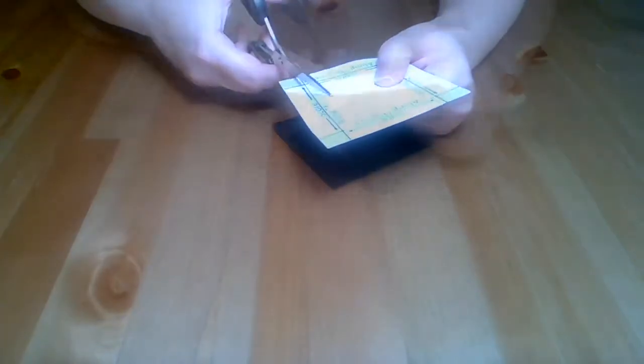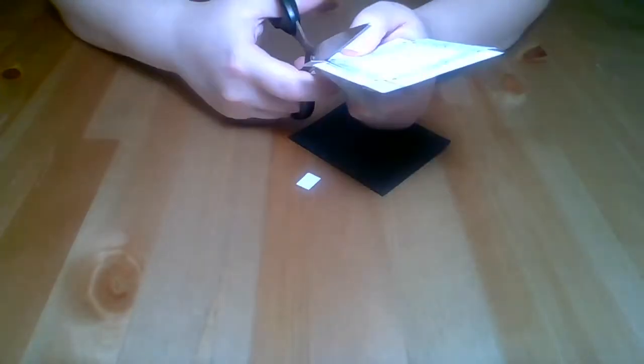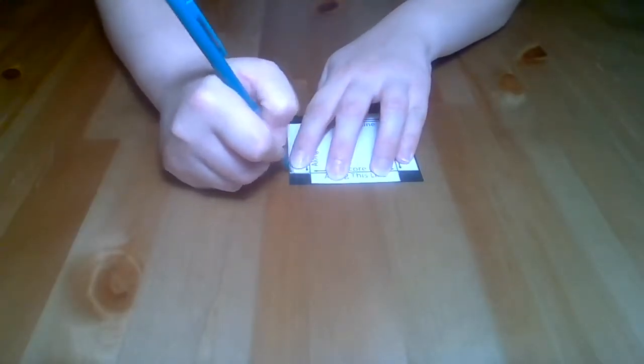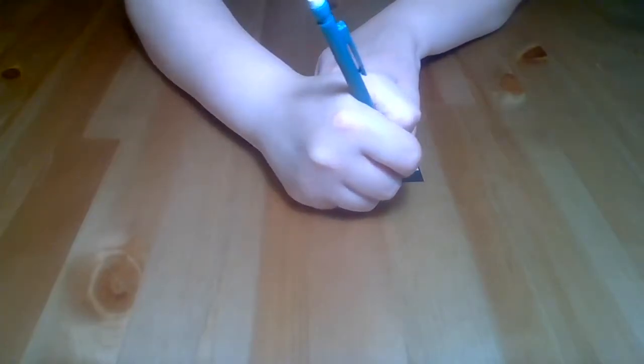Next you're going to have to cut out the gray part of the lid template that we talked about in step one. These gray areas are where we will have tabs. Place the template back on the lid and mark where the tabs will be.